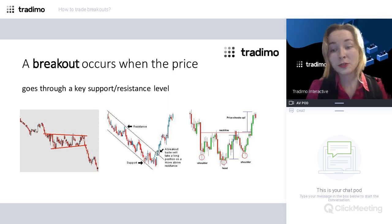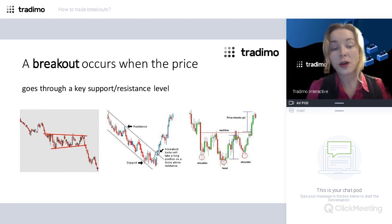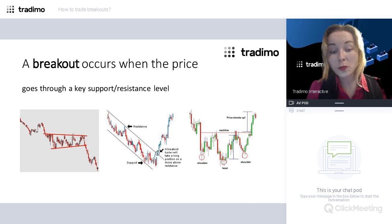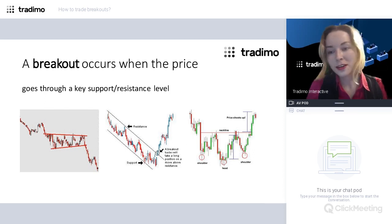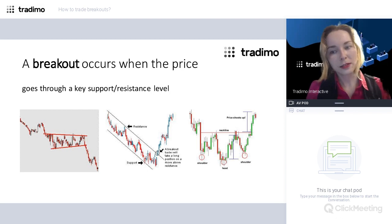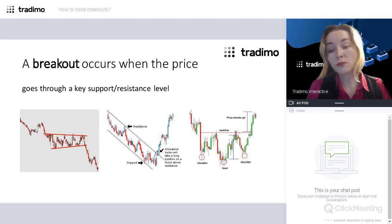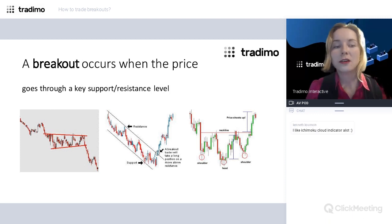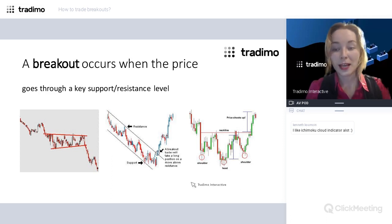We can use various techniques to locate these key levels of support and resistance — graphic methods like identifying previous highs and lows, drawing trend lines, using Fibonacci tools or pivot points. Levels related to price action are certainly the most powerful. Some indicators can also help, for example moving averages, which can form very good support and resistance. There was a comment from the audience mentioning Ichimoku cloud, which I agree is a great indicator — its cloud and lines can act as solid support and resistance as well.